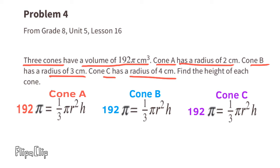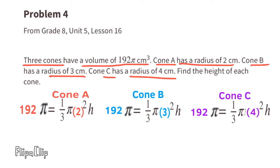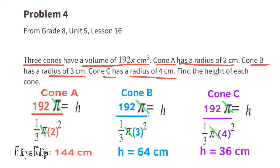We start by substituting R with the radius of each cone: 2 for Cone A, 3 for Cone B, and 4 for Cone C. Setting up the equation and solving for H, the height for Cone A is 144 centimeters, Cone B is 64 centimeters, and Cone C is 36 centimeters.